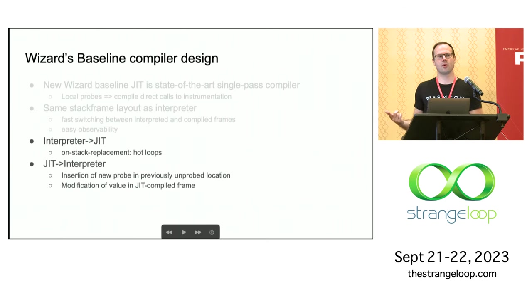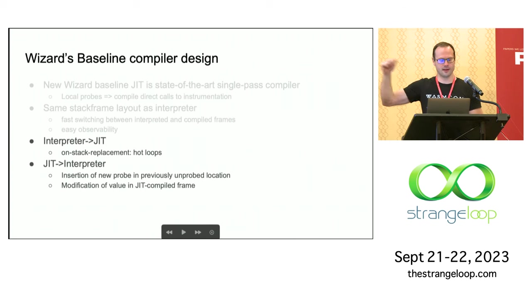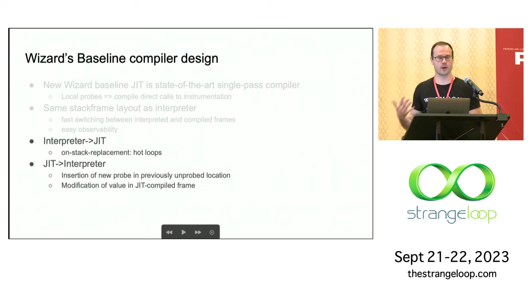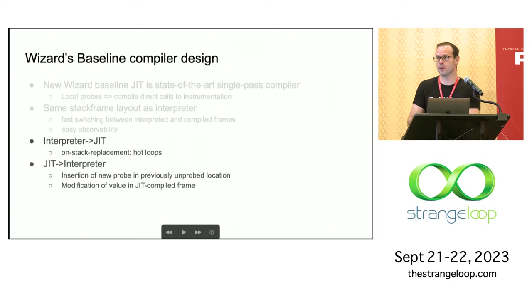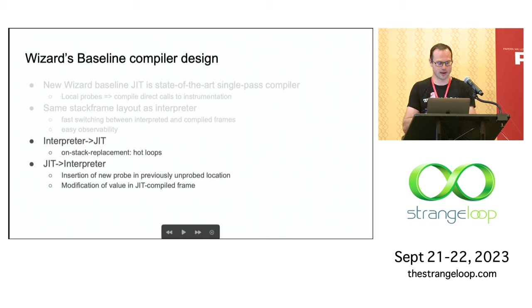We can also go both directions. Going from the interpreter to the JIT happens when we have a hot loop. Wizard has gotten to the point where it dynamically adapts to your program's execution — it starts in the interpreter and warms up to the JIT compiler — because we want faster startup. And that's really easy to do now with this stack frame layout setup. Wizard doesn't do speculative optimizations; it only goes back to the interpreter if you change instrumentation, so it's got predictable performance.